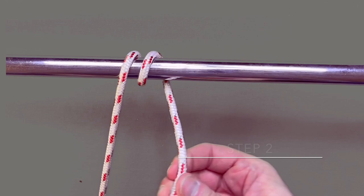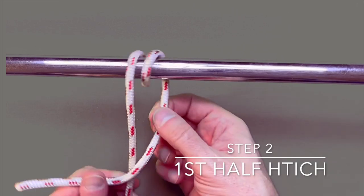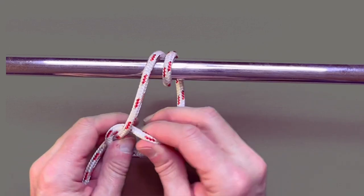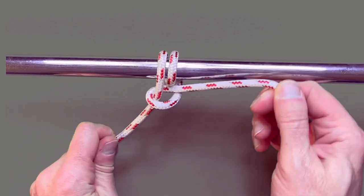For step two, you take the working end over the top of the standing end, looping it up through to create your first half hitch under the round turn.